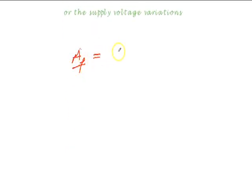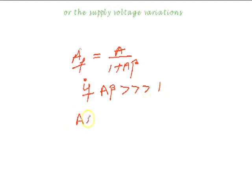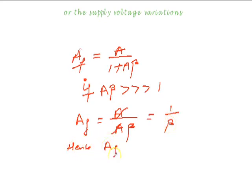We know the feedback gain is A over 1 plus A·β. AF is the feedback gain and A is the internal gain of the transistor. Now, if we set the circuit such that A·β is greater than 1, then 1 may be neglected compared to A·β. A cancels out, so AF becomes only 1 over β. The feedback gain only depends upon β — only depends upon the resistive network — and becomes independent of the transistor's parameters.